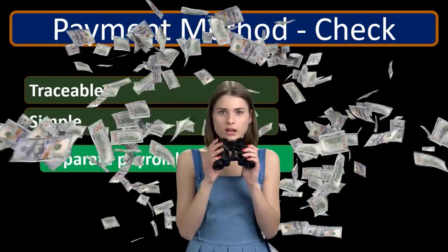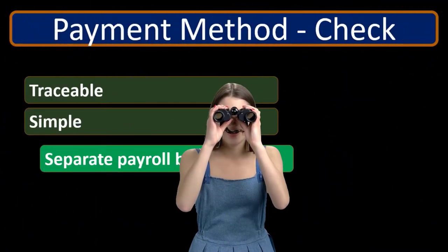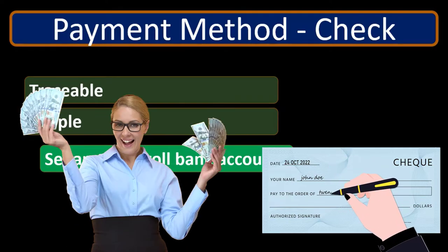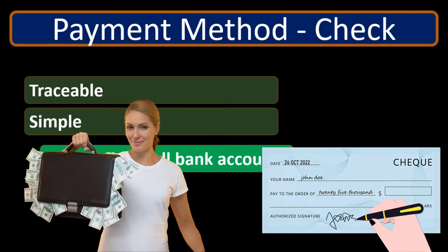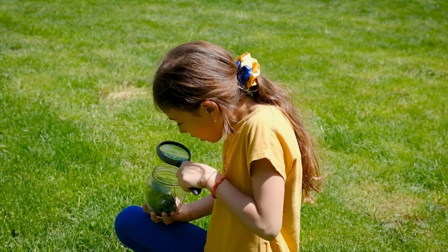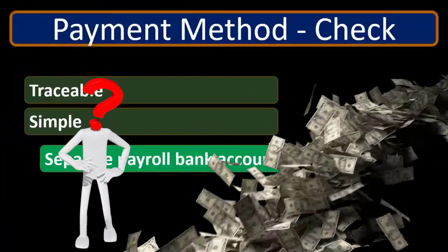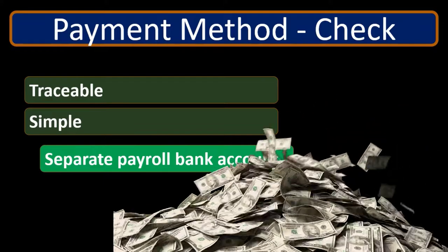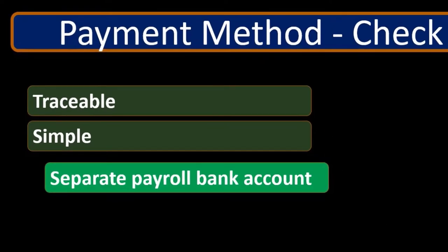The check stub should show what their gross pay is and what the deductions were to get to net pay — including federal income tax, state income tax, social security, Medicare, and other types of deductions. We want to give employees that information both for this particular check as well as the year-to-date figures. A check will be traceable, so if there's a problem we can go back and find it, or we can see if the check was cleared — which is a huge advantage over cash payment.